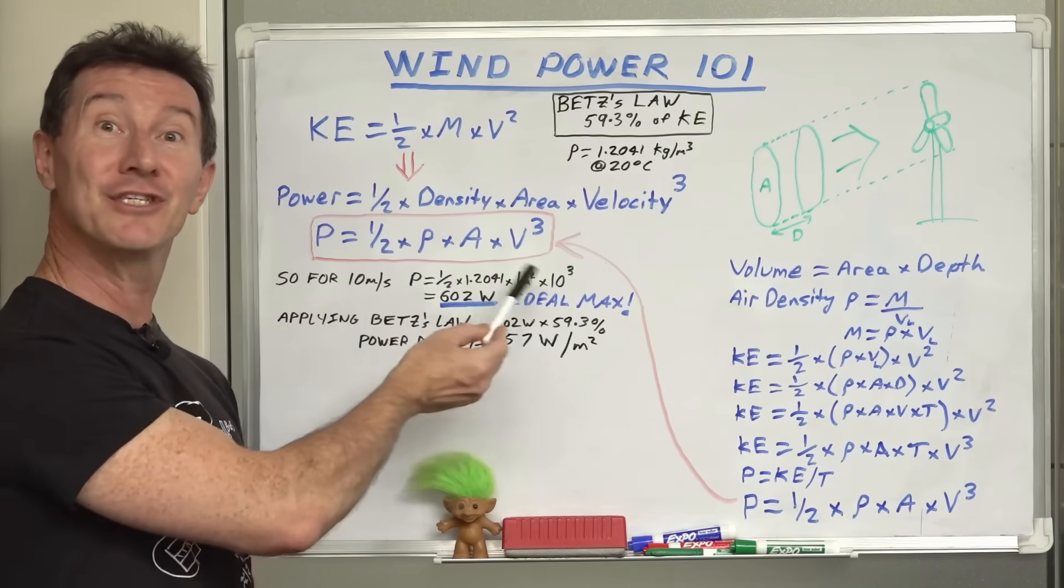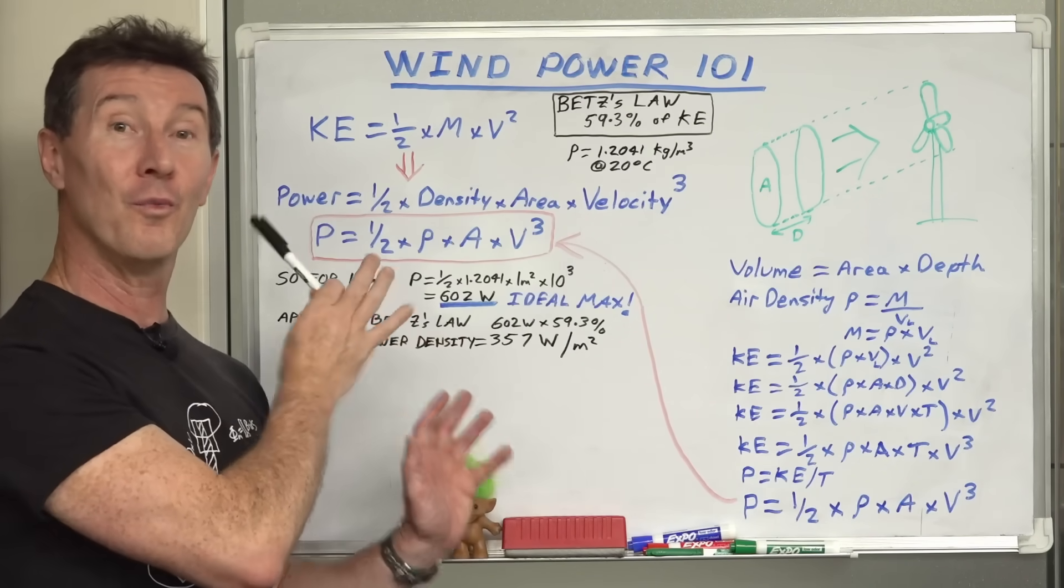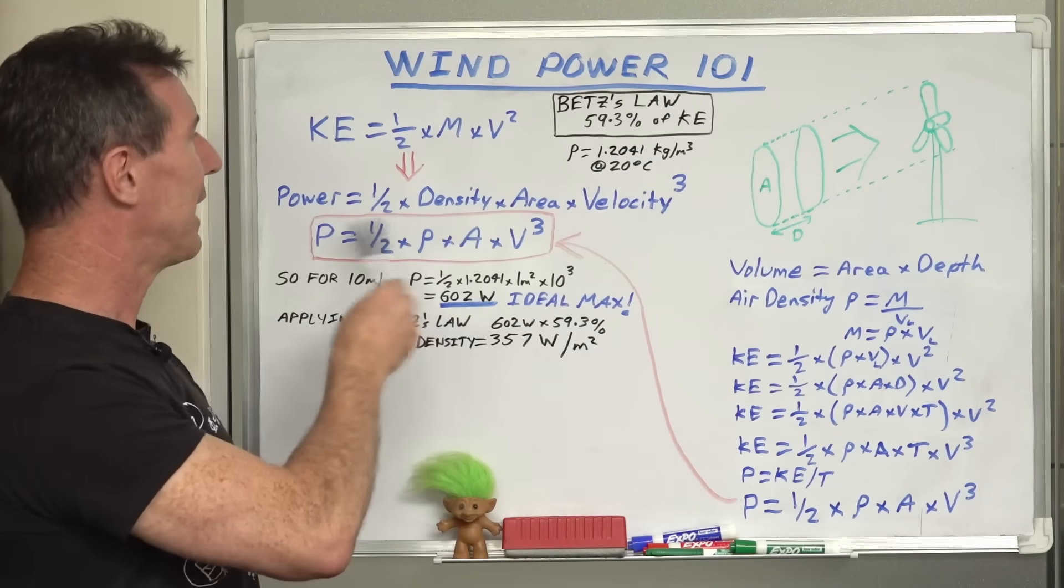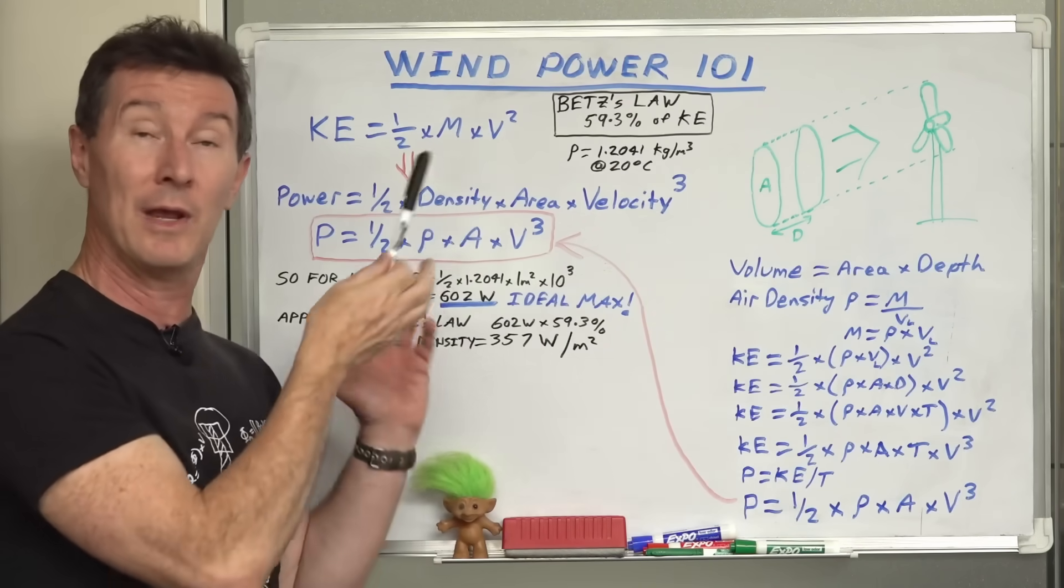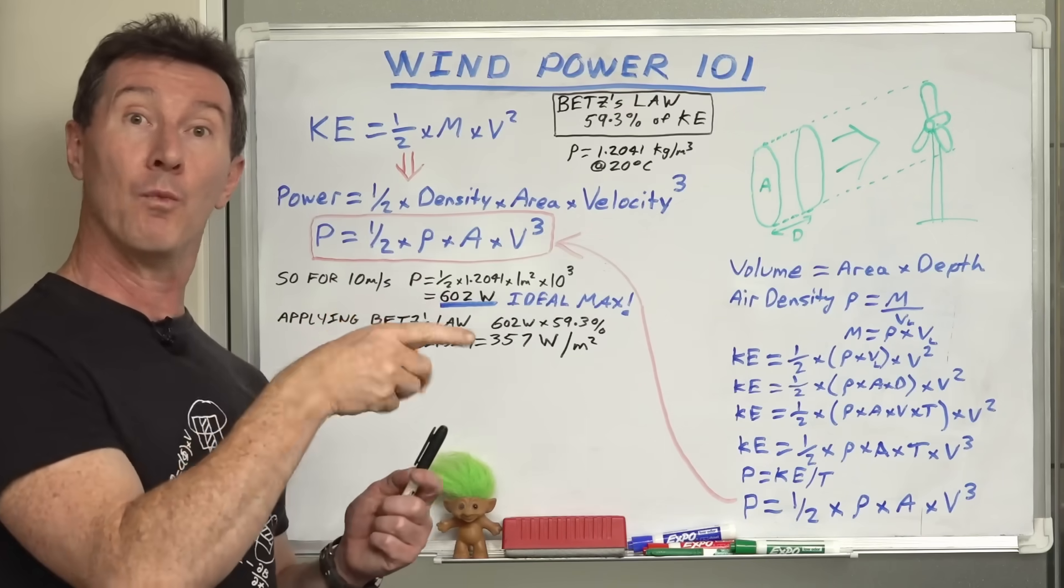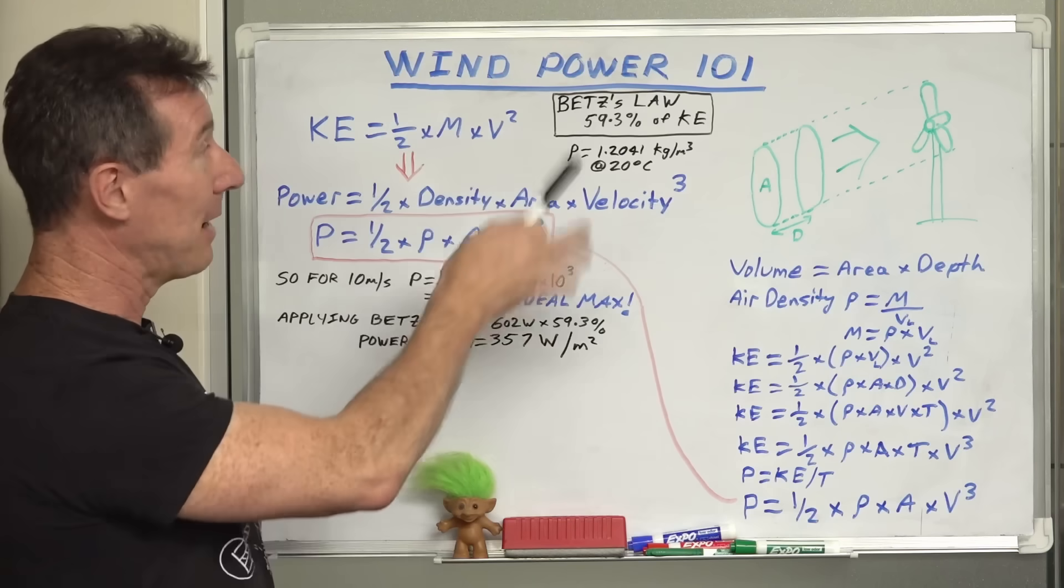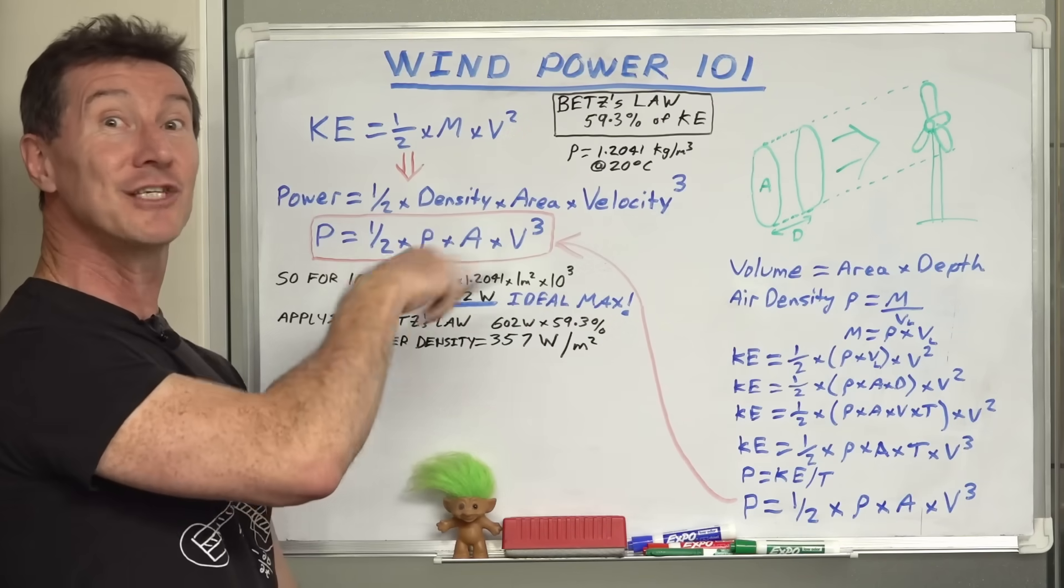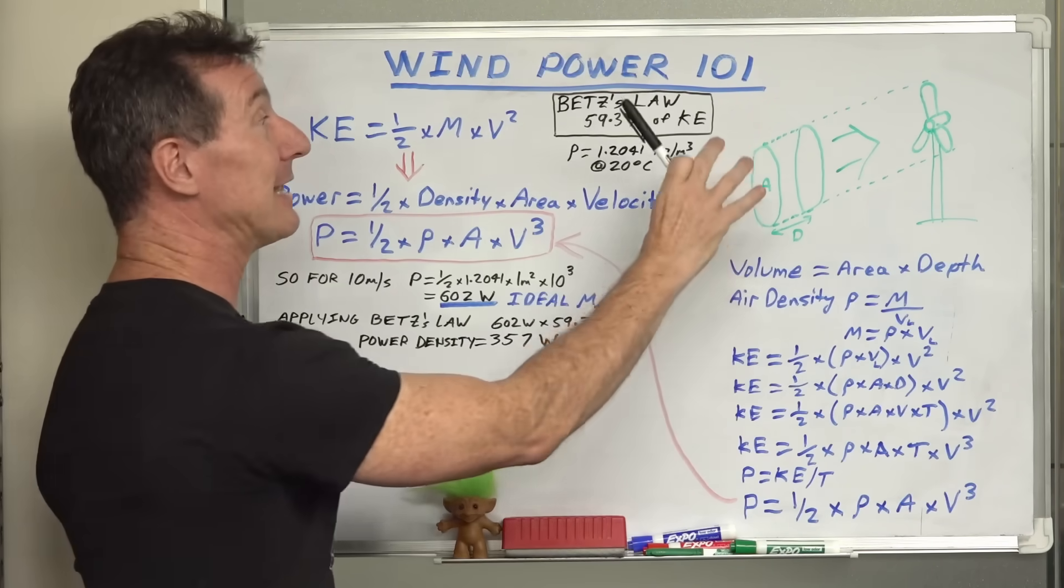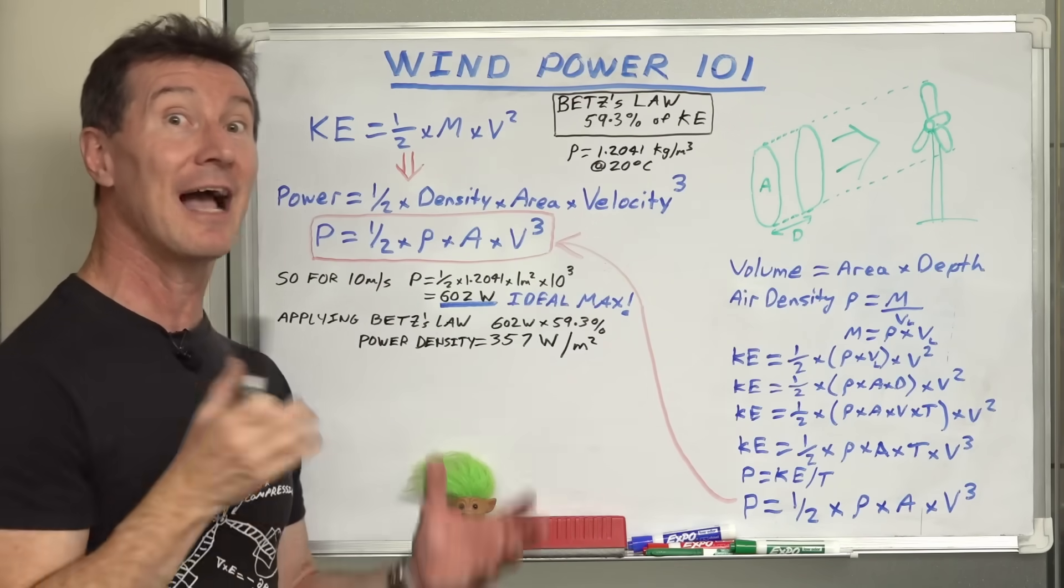That is our industry standard wind formula that applies to all wind turbines and actually applies to liquids as well. Density is just air or a liquid or whatever it is. Whether you have a water turbine, for example, you're going to be using the same formula. But this applies to windmill. This is the industry standard formula. This is how much power is available in a given volume of air to feed into your turbine. You can't get any more than that.